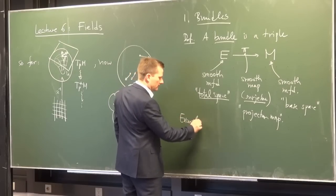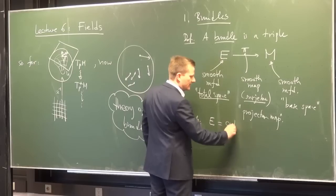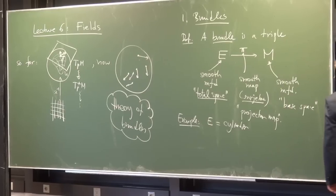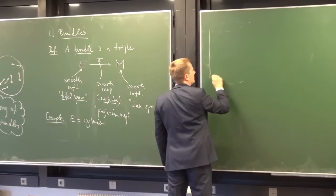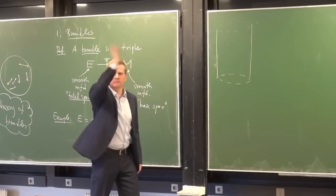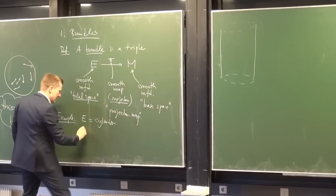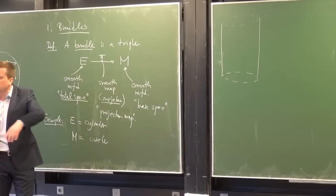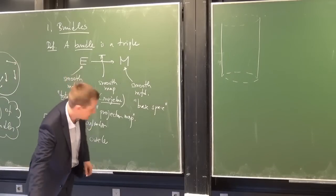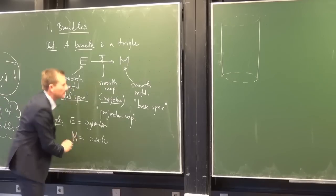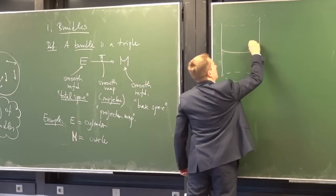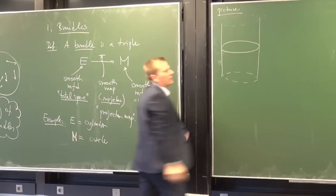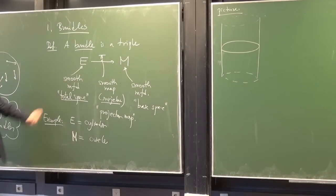Example. I could take E to be a two-dimensional cylinder. I could choose M to be a circle, equipped with a topology and a smooth atlas. And π is a map from E to M. Every time I say 'picture,' it's just for intuition — it's not mathematics. The mathematics is the definition.